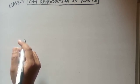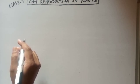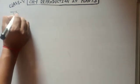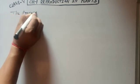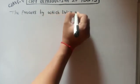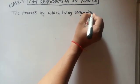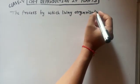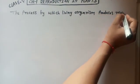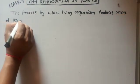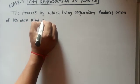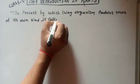First of all, we are going to discuss the definition of reproduction. The process by which living organisms produce more of its own kind is called reproduction.